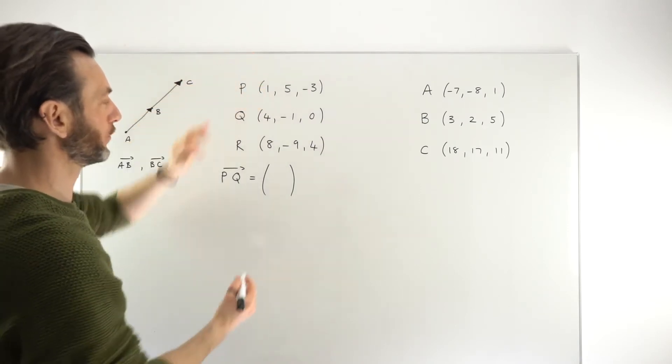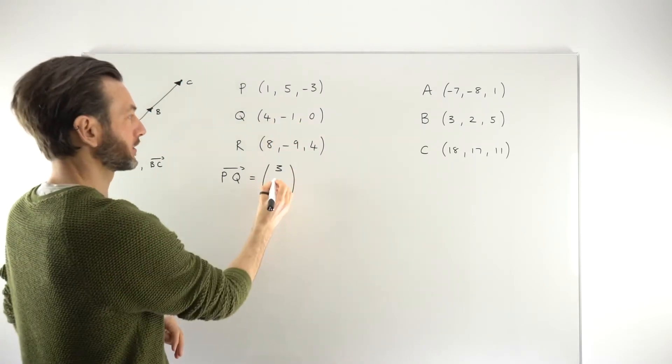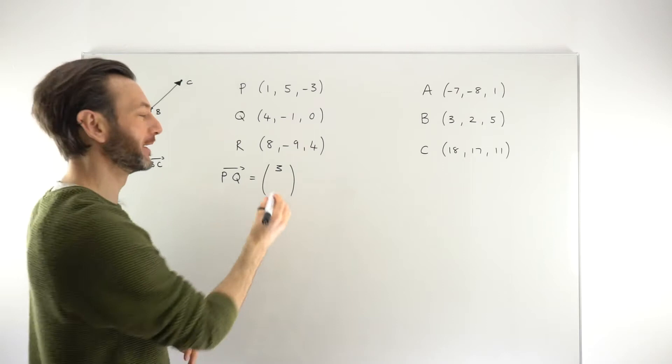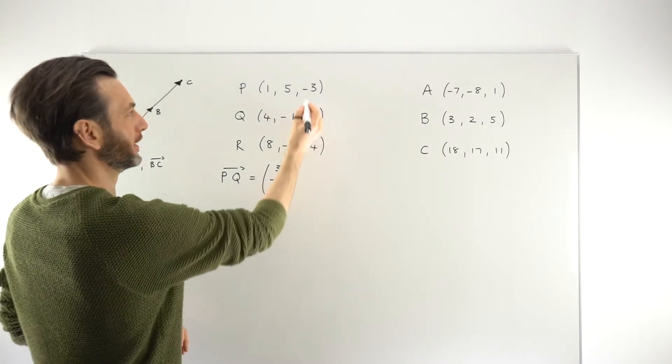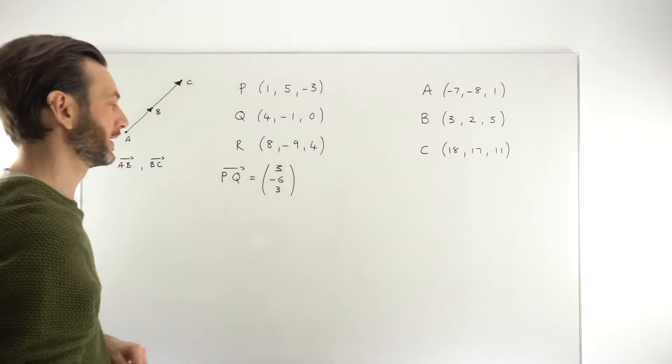Well, that's going from 1 to 4, which is a move in the x direction of positive 3. 5 to minus 1 is minus 6 in the y direction. And then minus 3 to 0 is 3 in the positive z direction.